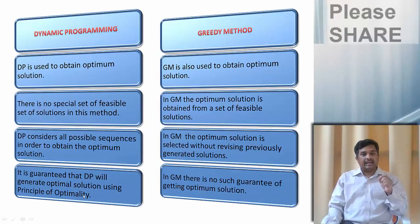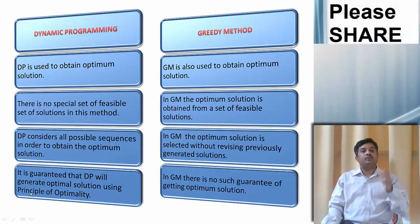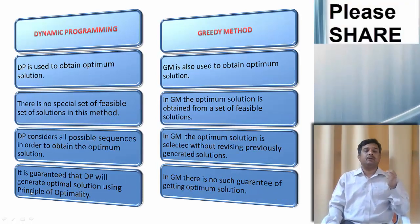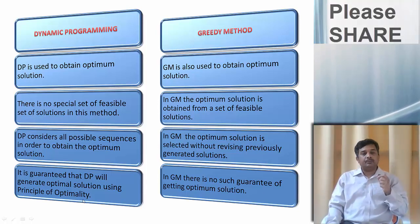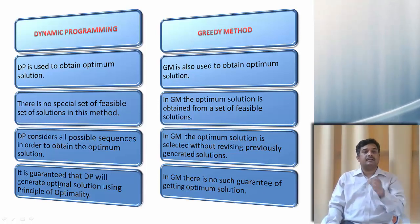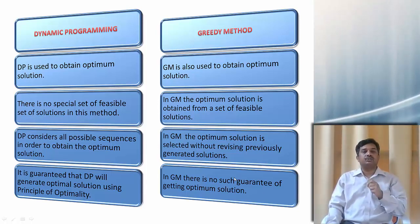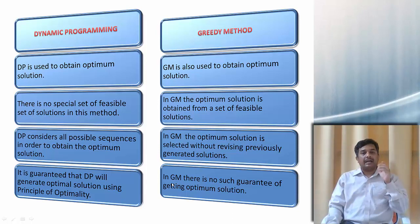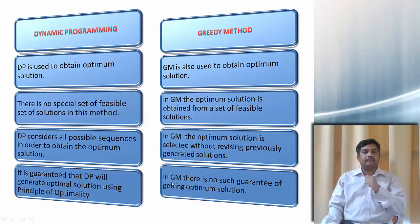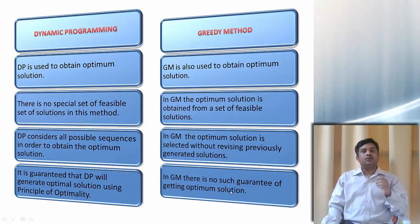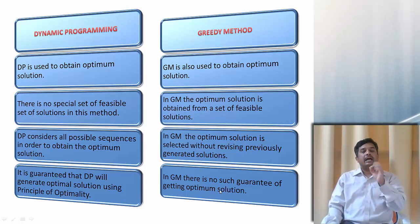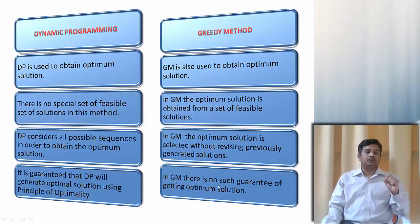In dynamic programming, we use the principle of optimality. This principle guarantees us to have the optimum solution. But under greedy method, no such guarantee is given to have an optimum solution.